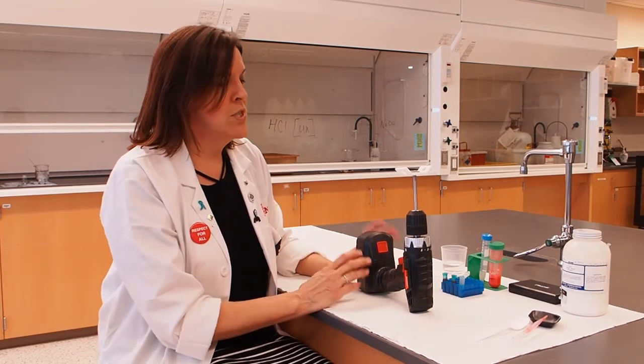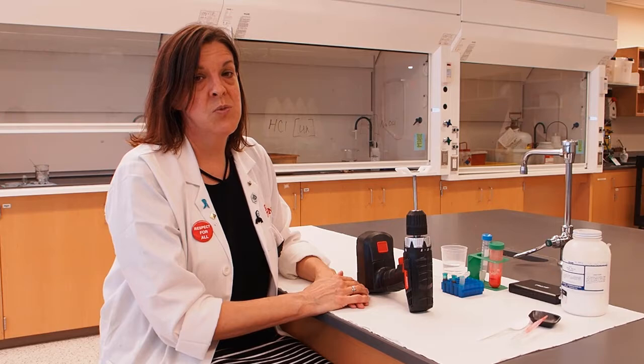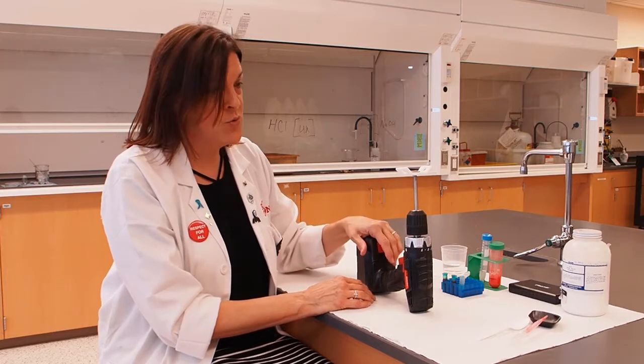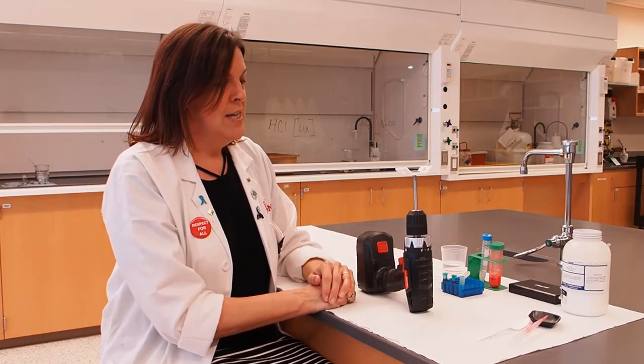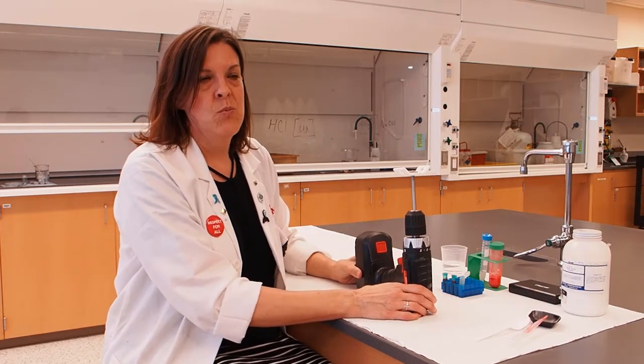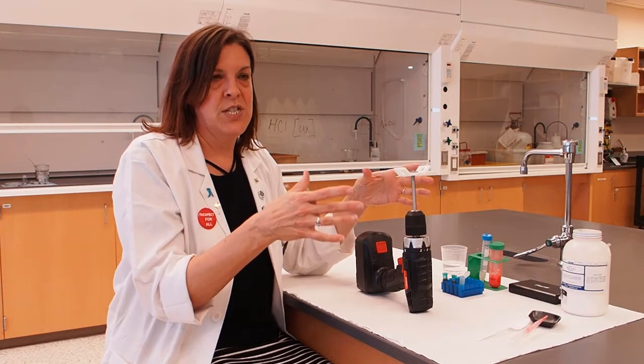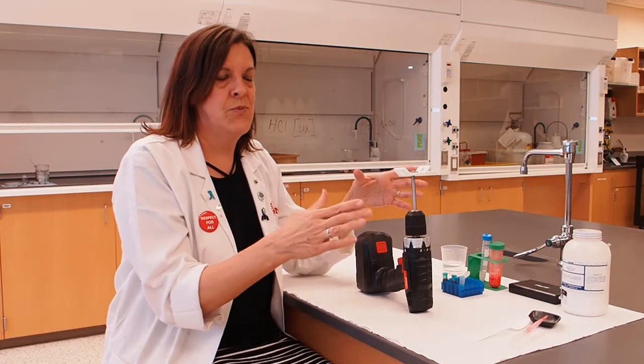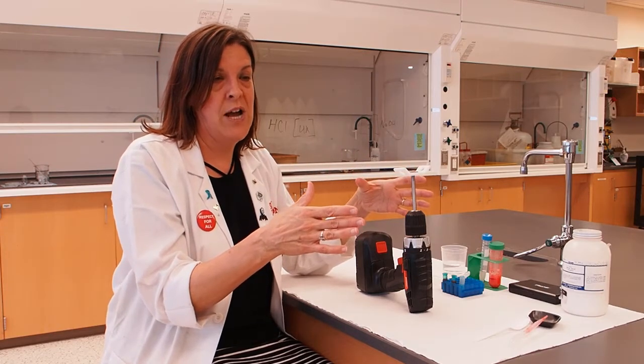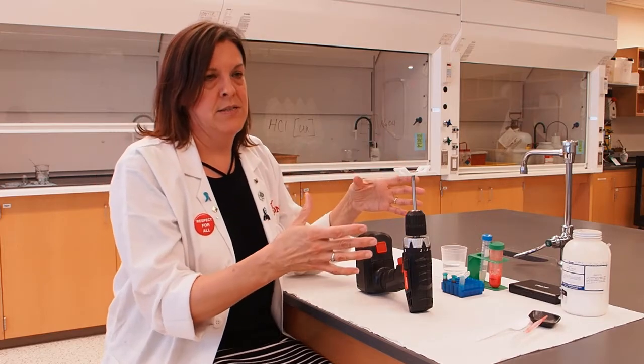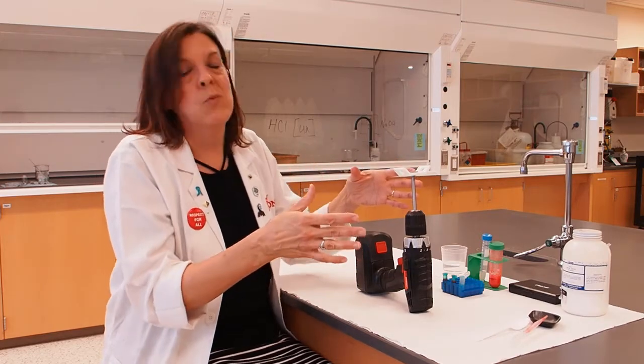Safety thing number two, which applies to all centrifuges, regardless of whether it's made from a drill or whether it's one you find in the lab, is that they need to be balanced. If you've ever watched a washing machine wash your clothes, when it gets to the spin part, you may see the washing machine vibrate back and forth. That's because the weight in the part of the washing machine that's spinning your clothes around to get the water out of them is what we call unbalanced. It means there's more weight on one side than the other.